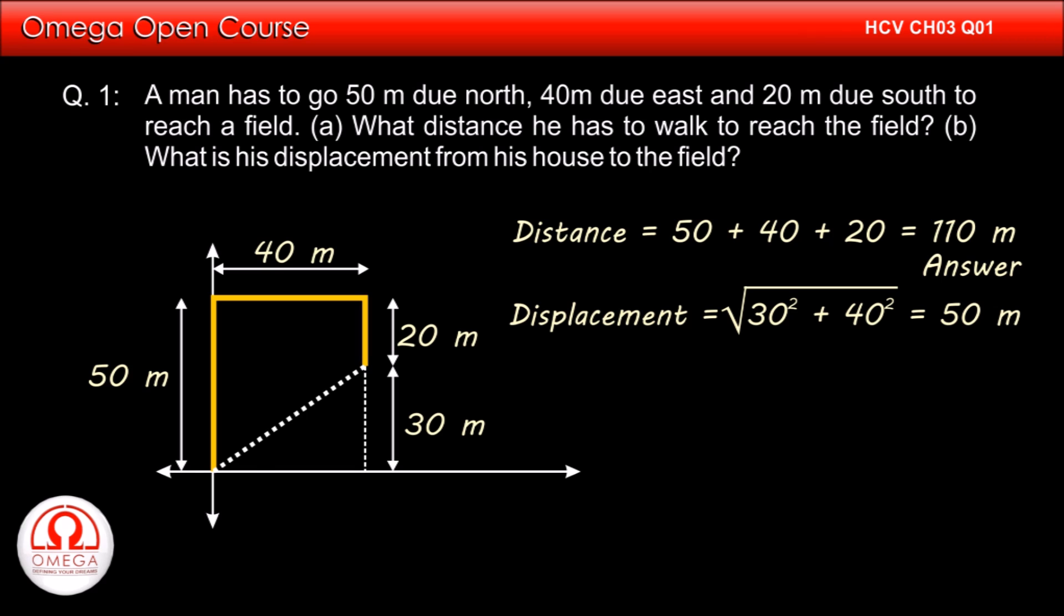Also if we assume the direction of displacement to be theta towards north from east, then tan theta is equal to 30 by 40 or tan theta is equal to 3 by 4. Thus the direction of displacement is at an angle tan inverse 3 by 4 towards north from east. This is answer to part B of the question.